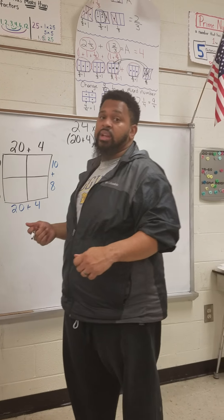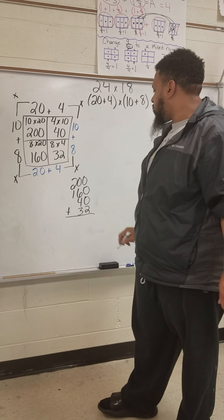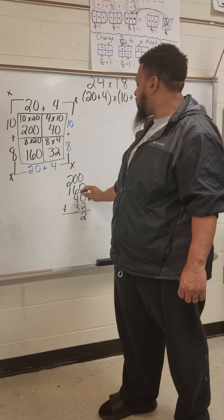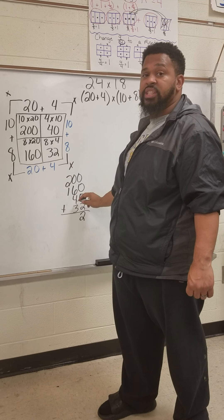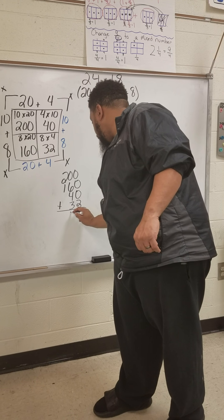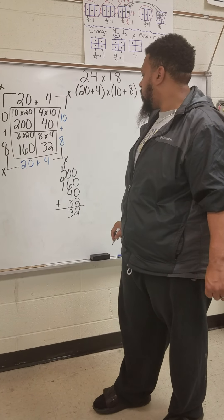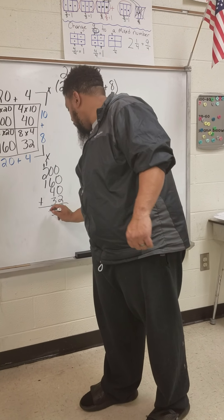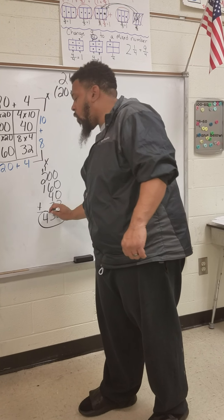The last step in box method is to add each one of these individual answers together to get a total answer. So we add 200 plus 160 plus 40 plus 32. We get 2 in the ones place, then 0 plus 6 plus 4 plus 3 gives us 13, so we regroup the 1. Then 1 plus 2 plus 1 gives us 4. Our total answer is 432.